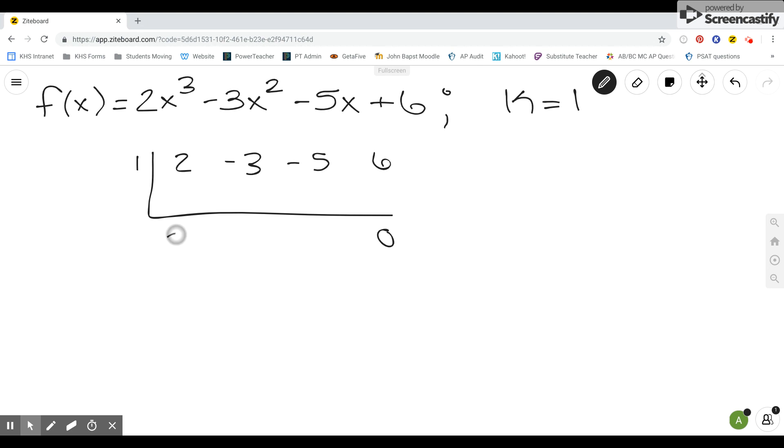So let's carry down the 2 and multiply. 1 times 2 is 2 and add and then multiply. 1 times negative 1 is negative 1. Add negative 5 plus negative 1 is negative 6 and multiply. 1 times negative 6 is negative 6 and then add. So we do get 0. So we did synthetic division correctly. That's always good.